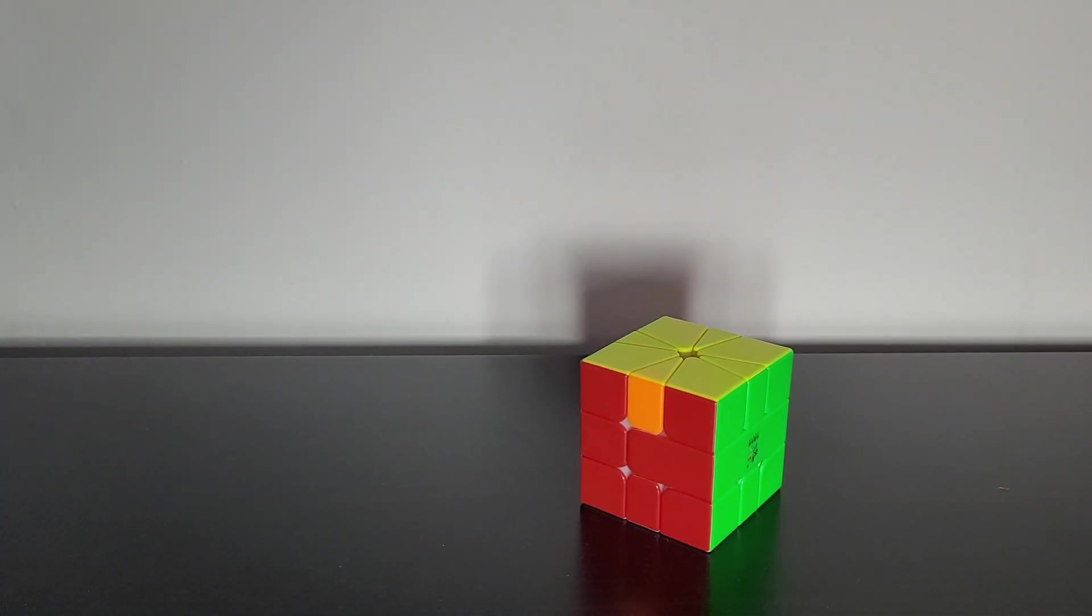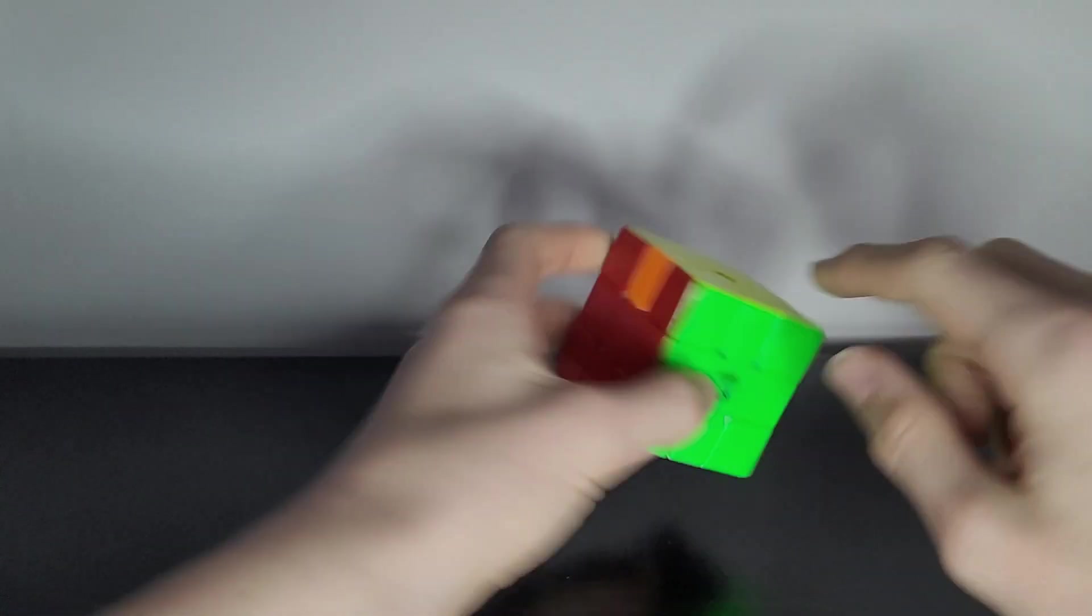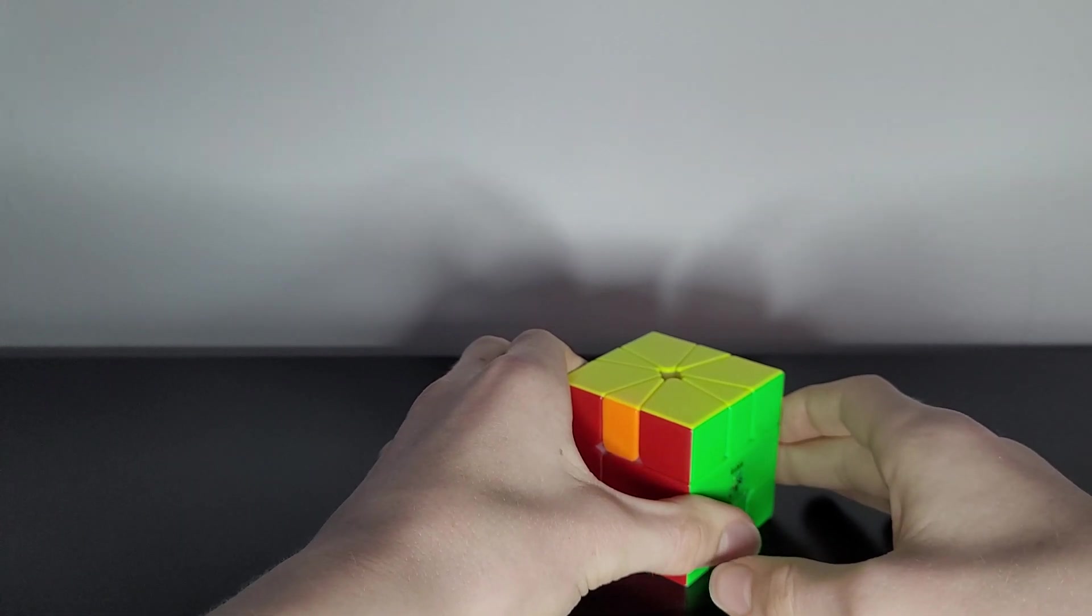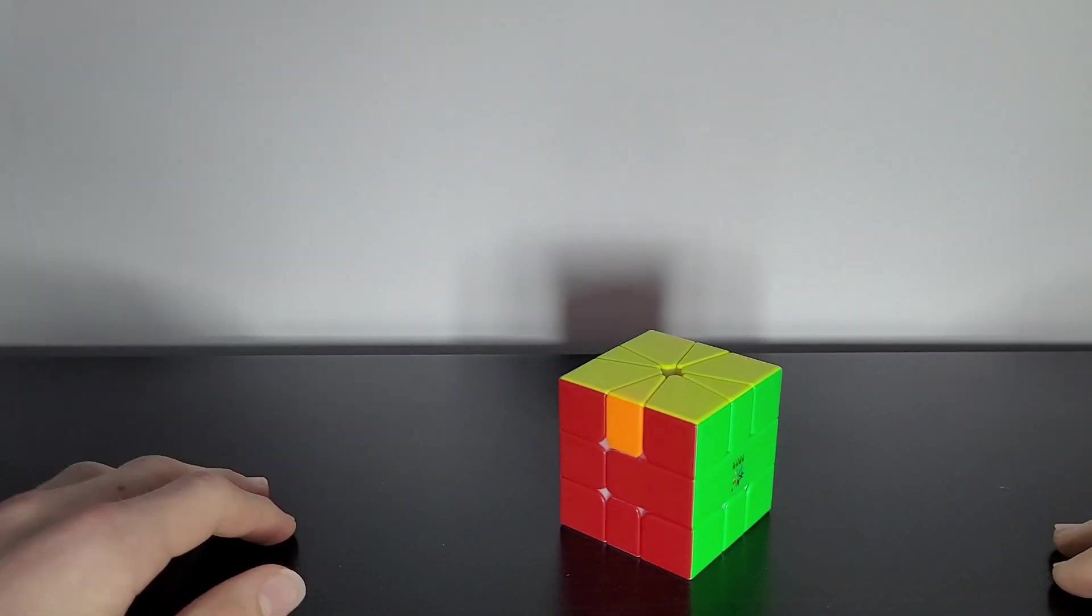The first way is a longer algorithm but is easier to recognize. I'm going to show you how to swap this piece and this piece. The other way to solve it is midway through the solve. If you can recognize 3x3 PLL cases, I would skip to this timestamp here.